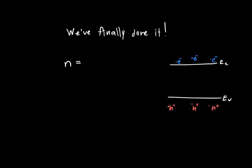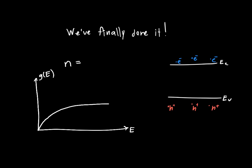To calculate the number of electrons, we use quantum states. Recall we derived the density of states function g(E) — the number of states per unit energy, also technically per unit volume. This density of states follows a square root function: square root of E times the effective mass to the three-halves, plus a bunch of constants out front. Within a certain slice dE, the number of states N is just equal to g(E) times dE.